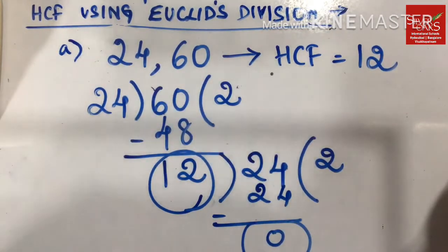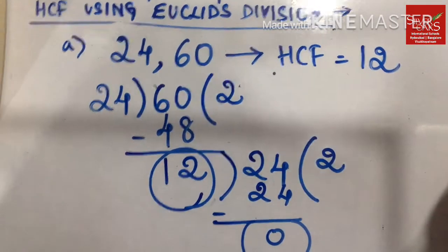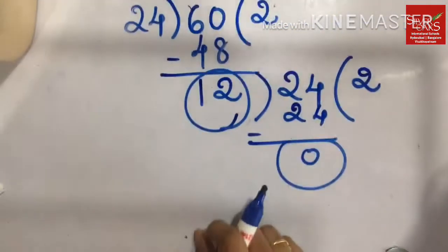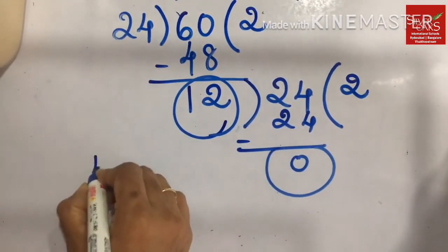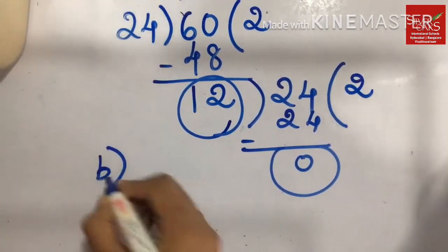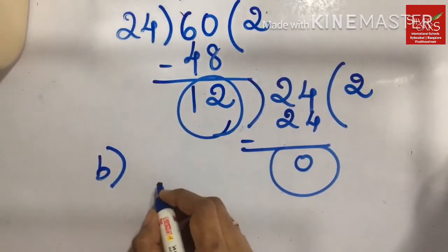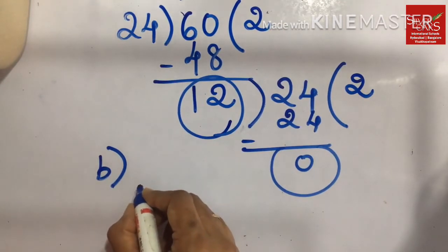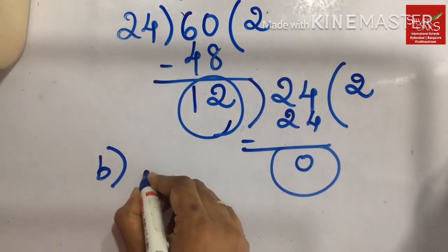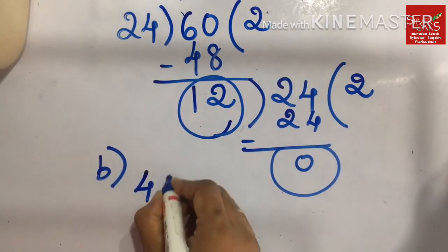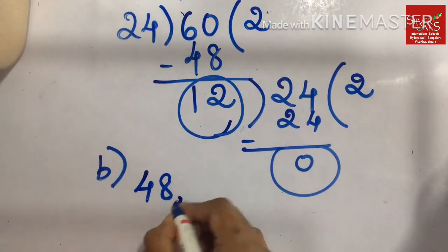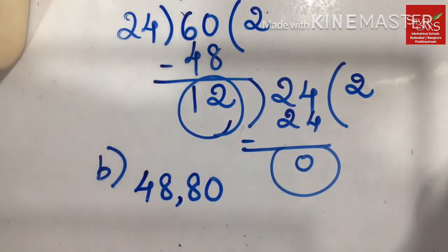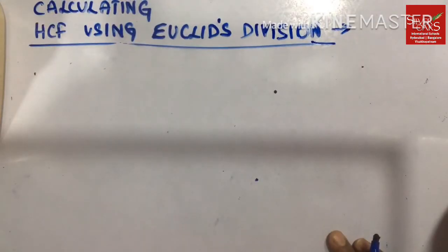Would you like to try it out? I would like to give you a combination of numbers. Find the HCF of 48 and 80. Hope you got the HCF of 48 and 80.